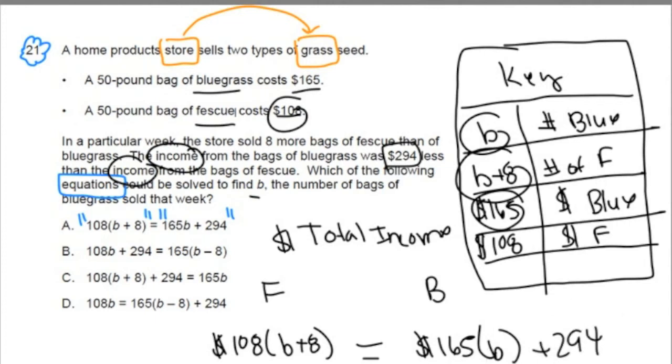And guess what, team? We just matched up using a key, thinking through the problem. We built, we reverse engineered an equation that could help us solve for B. Look at this. Look at A. A is the answer.